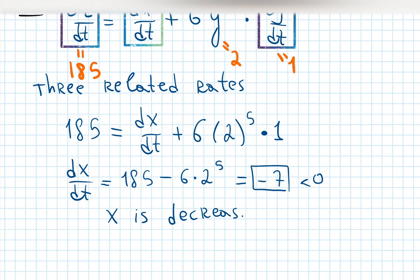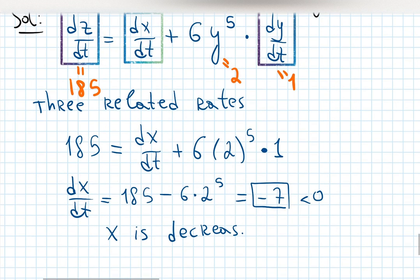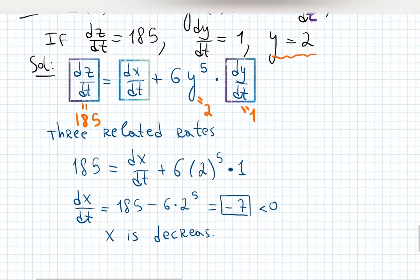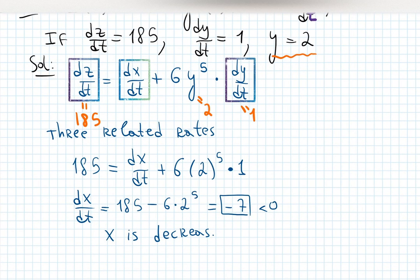The answer is negative 7. If the derivative is negative, x is decreasing. In two weeks we'll start optimization problems where this matters — if a derivative is negative, something like business profit or rocket speed is decreasing, and you take that into account when building models. More than two related rates is perfectly normal.